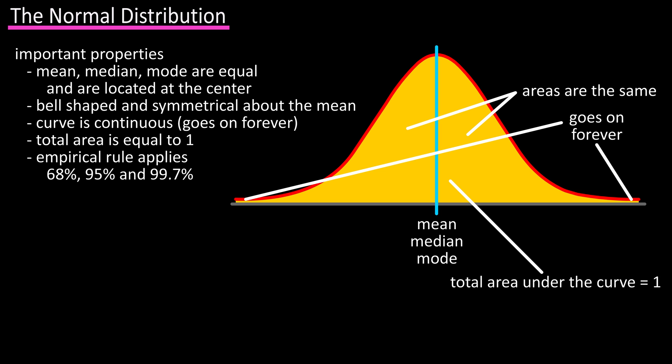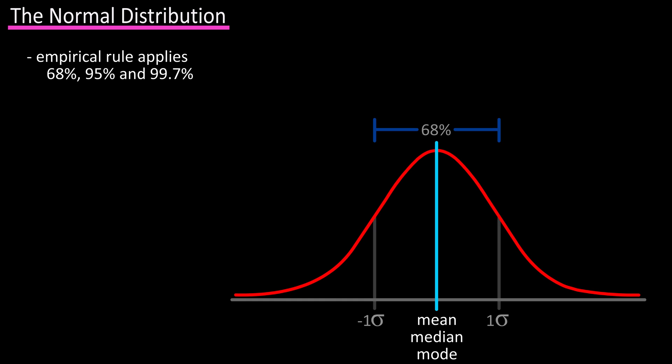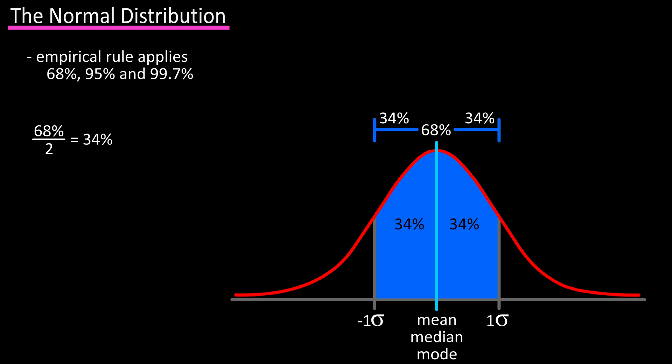Number five is that the empirical rule applies to a normal distribution curve. It states that about 68 percent of the area under the curve lies within one standard deviation of the mean — one standard deviation to the left and one to the right. Since the shapes and areas are the same on both sides, we can divide 68 percent in half to get 34 percent on both sides.